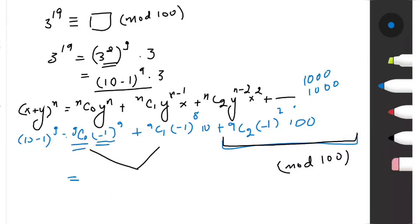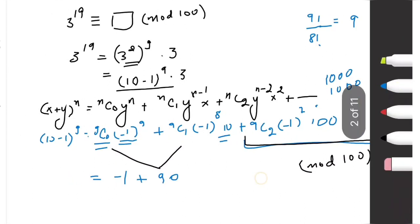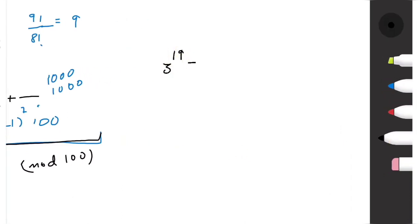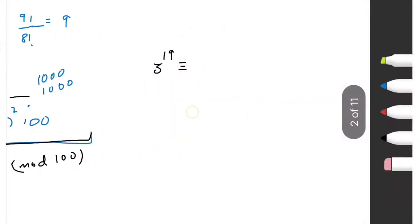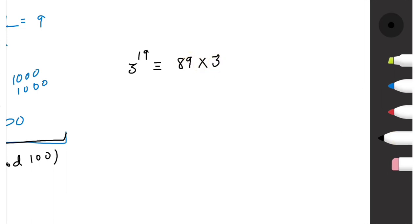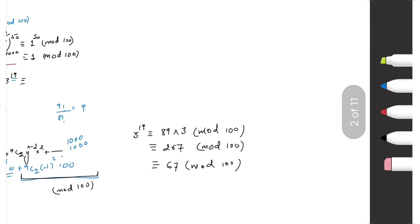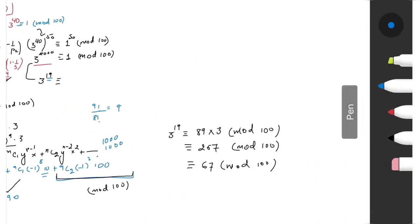Computing the first two terms: C(9,0)·(−1)^9 = −1, and C(9,1)·(−1)^8·10 = 9 × 1 × 10 = 90. So (10−1)^9 ≡ −1 + 90 = 89 (mod 100). Therefore 3^19 ≡ 89 × 3 = 267 ≡ 67 (mod 100).